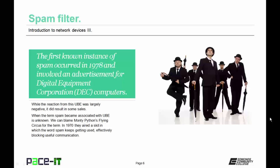The first known instance of spam occurred in 1978, and involved an advertisement for Digital Equipment Corporation — that's DEC — computers. While the reaction from this spam was largely negative, it did result in some sales, and the spam industry was born. When the term spam became associated with unsolicited bulk email is unknown, but we can blame Monty Python's Flying Circus for the term spam. In 1970, they aired a skit in which the word spam keeps getting used — in fact, it's used in a song — and it effectively blocked useful communication. That's how a lot of people feel about spam: not that it's necessarily harmful, but that it can hinder useful communication.